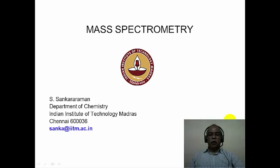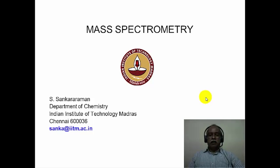Welcome to module 17 of the course on application of spectroscopic methods in molecular structure determination. In this module, we will continue with mass spectrometry and look into some aspects of electron impact ionization mass spectrometry and chemical ionization mass spectrometry. These are the two most widely used mass spectrometry techniques for structure elucidation of simple organic molecules with a molecular weight range of something like 800 to 1000 or so.